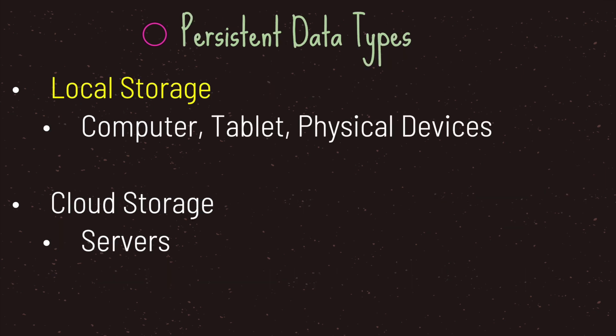Now there are two different types of persistent data. We have local storage, which is basically saving to a physical device such as a computer or tablet, and we have cloud storage, which is basically saving to a server. In this episode we will be looking at local storage; we will not be touching on cloud storage.